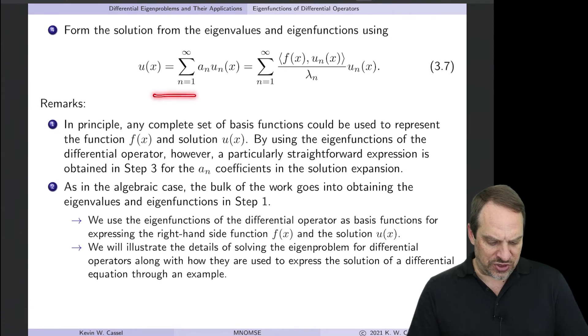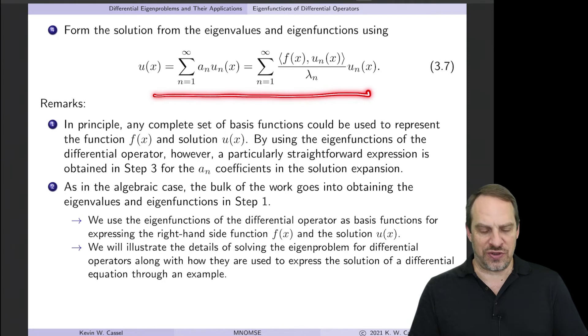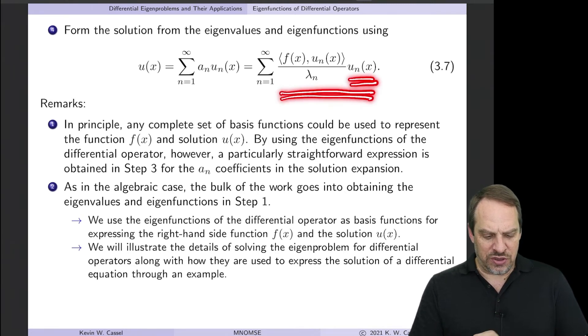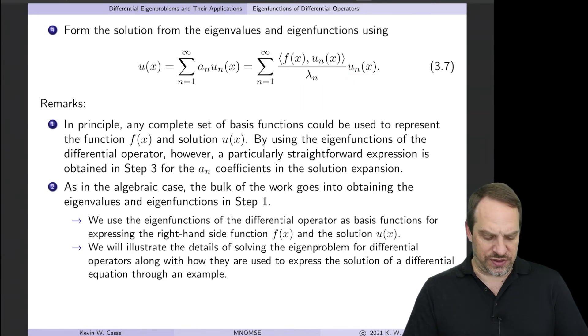So our final solution, U, is now equal to A sub n, which is the inner product of F with U sub n over lambda sub n, times each of the U sub n's. And we just add up all these terms for each of the n's.